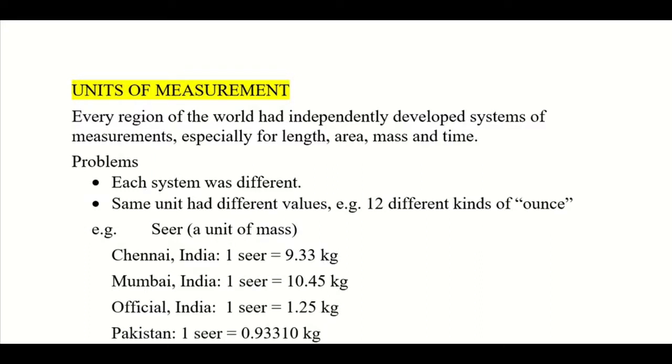Now we look at units of measurement. When we want to make a measurement, we need units. These units were developed independently all around the world by every country. Every civilization had their own system of units, especially of length, area, mass, and time, because they needed to make buildings and measure land holdings, so they needed units for area and length. Mass was needed for purchasing, selling, and buying, and of course time.